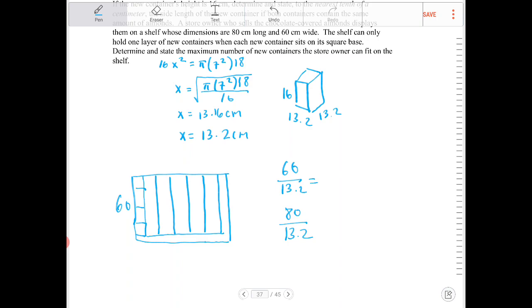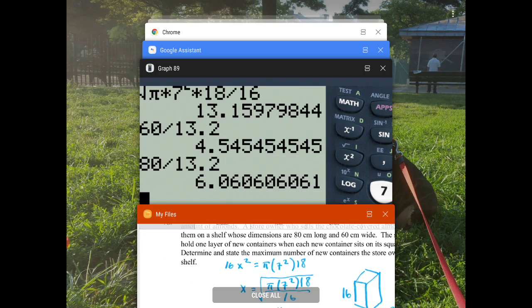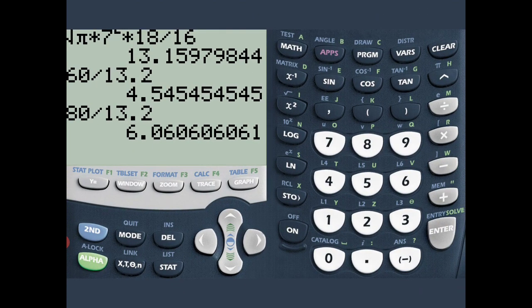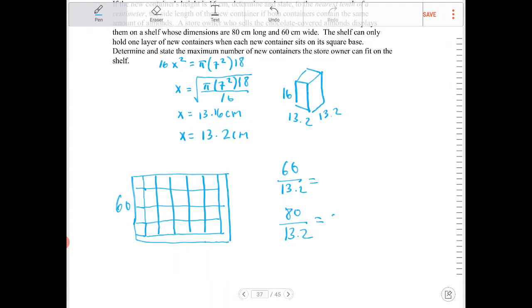5, and 6, with a little left over. So going in this direction, I'm going to be able to fit. So this is going to be 6.06, and the other is 4.54. So the most I can fit is 4 going down, and 6 going across. Or, in other words, I can fit 24.